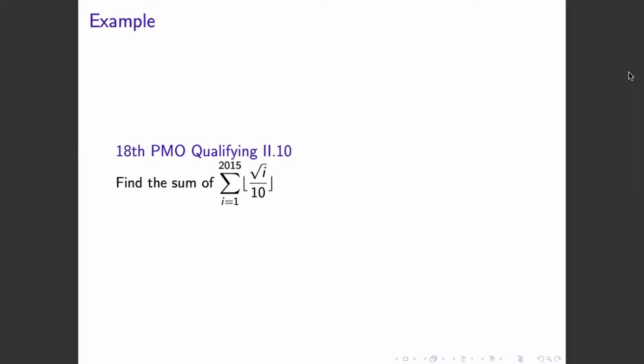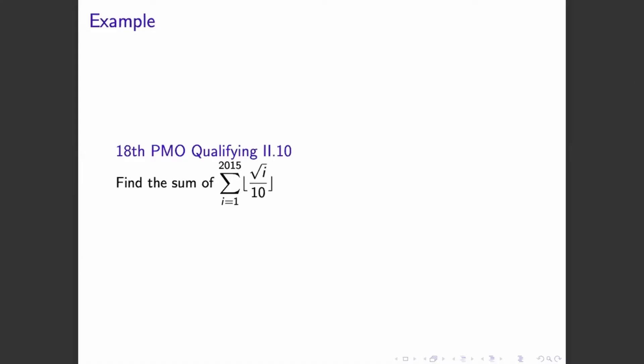Let us consider, for example, this problem from the 18th PMO qualifying stage part 2, number 10. Find the sum of the summation i from 1 to 2015 of the floor of square root of i all over 10.